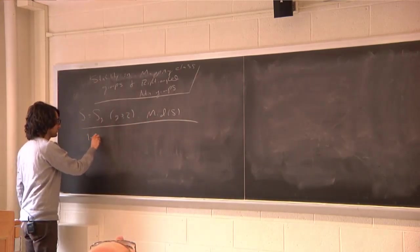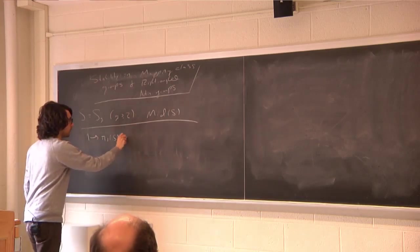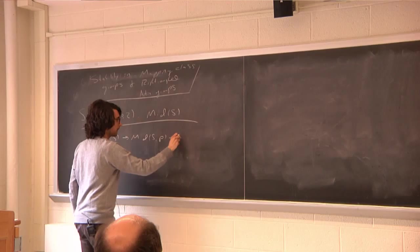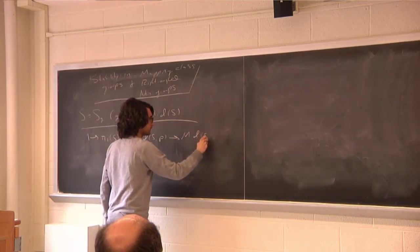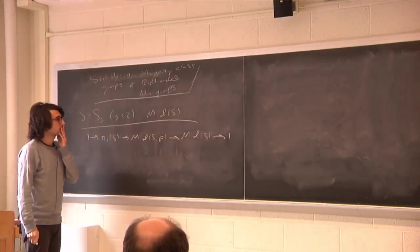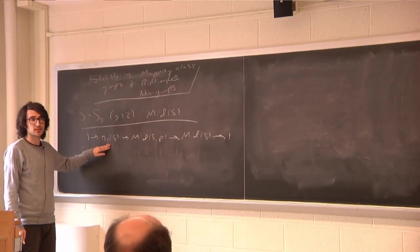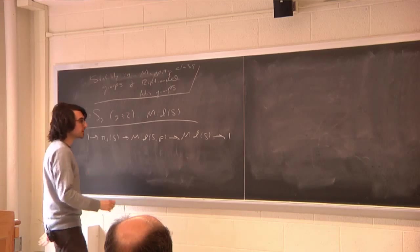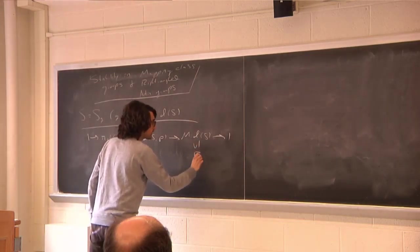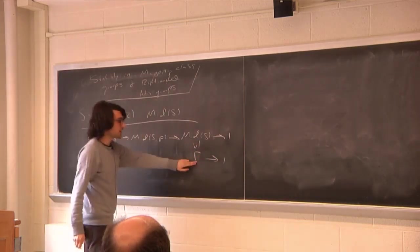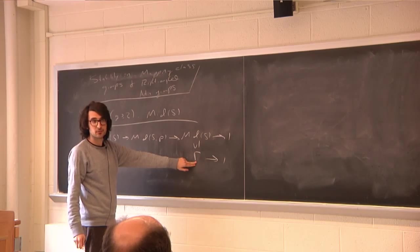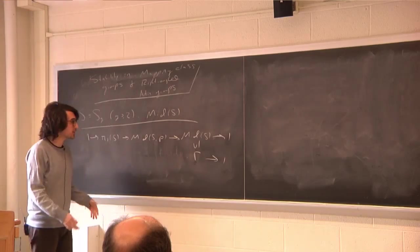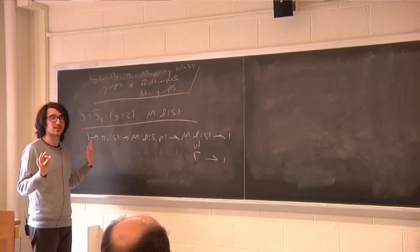There is the following well-known short exact sequence — the Birman exact sequence for the mapping class group — where one term is the fundamental group of the surface. For any subgroup Γ of the mapping class group, I get a corresponding extension of the surface group simply by pulling it back through this short exact sequence via the homomorphism P.